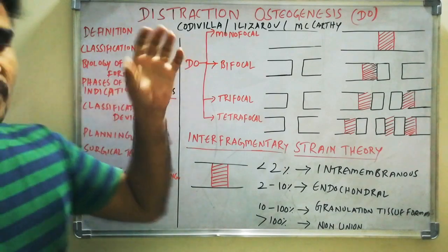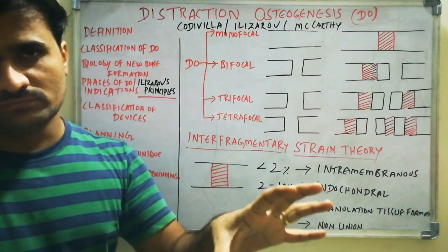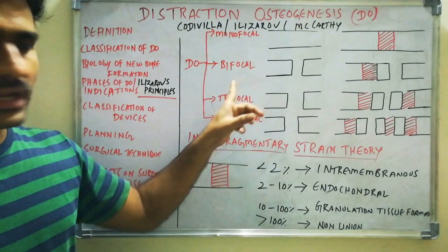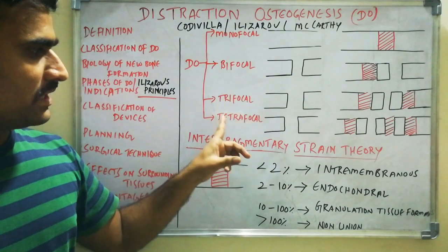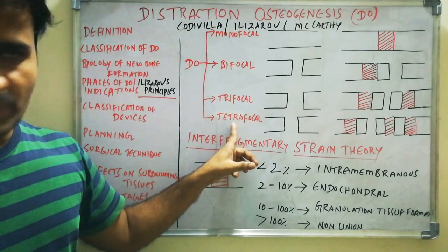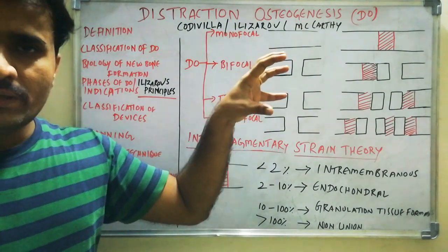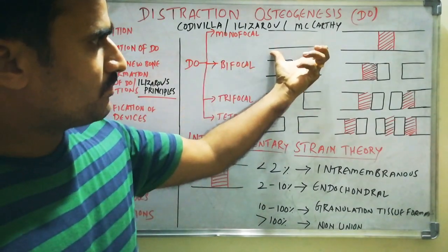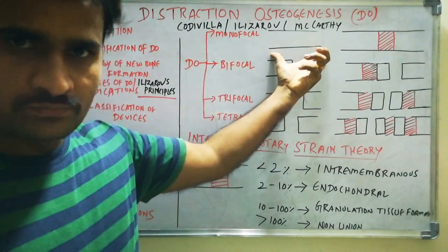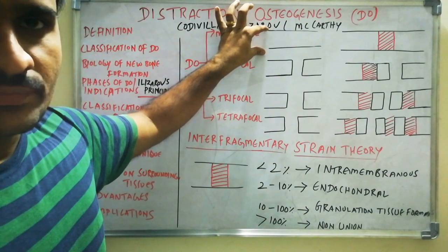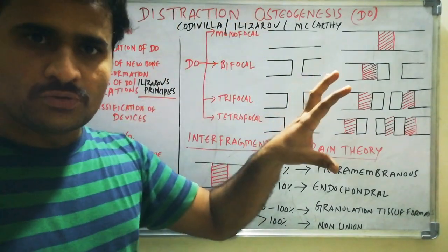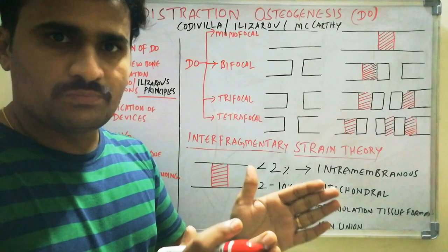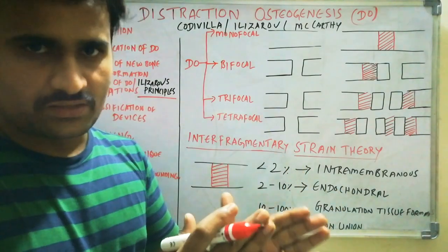Coming to the classification of DO, it is divided into four types: monofocal, bifocal, trifocal, and tetrafocal. Monofocal are purely lengthening procedures. Consider a bone that may be deficient due to hypoplasia or inadequate length. In monofocal, we prepare an osteotomy in this bone.